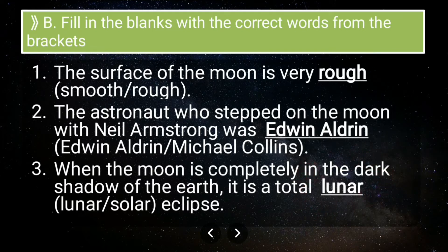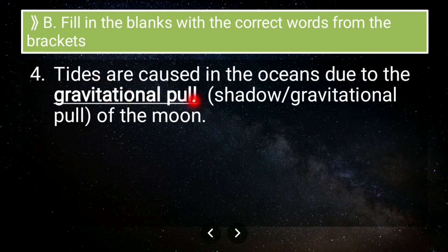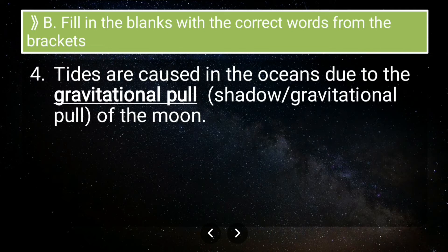Fourth question: tides are caused in the ocean due to the blank of the Moon. The answer is gravitational pull. The gravitational pull of the Moon causes the rise and lowering of tides. The Moon has its own gravitational field and tries to attract the Earth, but since Earth is very massive, the effect is on the water. Water is comparatively less dense and gets attracted towards the Moon whenever it is facing the Moon.